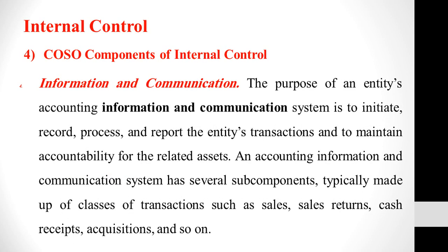The fourth component of internal control is information and communication. The purpose of an entity's accounting information and communication system is to record, process, and support the entity's transactions and to maintain accountability for related assets. An accounting information and communication system has several sub-components typically made up of classes of transactions such as sales, sales returns, cash receipts, acquisitions, and so on. To understand the design of the accounting information system, the auditor determines the major classes of transactions of the entity.